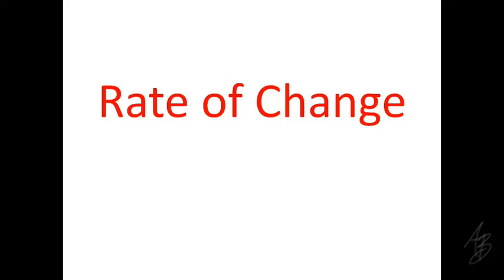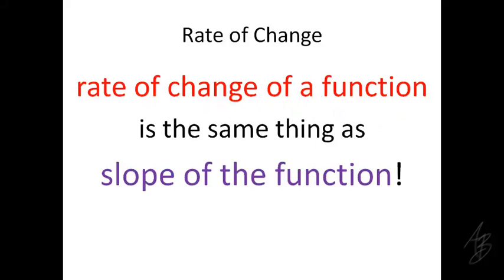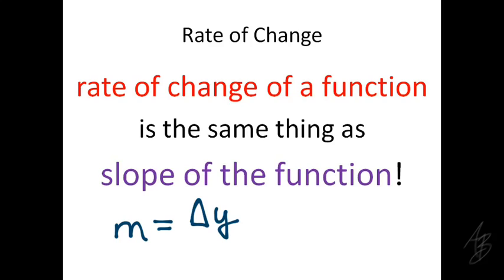In this video, we're going to revisit the idea of rate of change, and we're going to look at it a lot more closely than we did at the beginning of this chapter. The key idea with rate of change is that the rate of change of a function is really the same thing as the slope of the function. So we're going to be using the slope formula quite a bit. The slope of a function is equal to the change in y over the change in x.